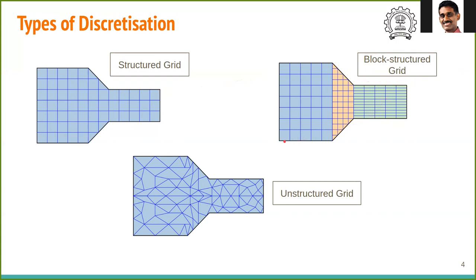This is where block structured grids come to be helpful. Here we have different regions known as blocks. In each block, we have a structured mesh. This way, we can have finer grids in regions of high gradient and coarser mesh in other regions. While block structured grids are computationally efficient, it is not so easy to create them automatically. It might require a significant amount of manual intervention.